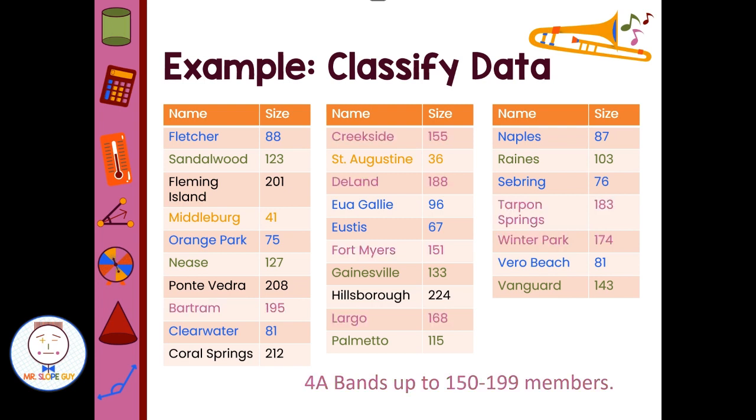4A is bands from 150 to 199. One, two, three, four, five, six, seven bands. And that leaves left our big bands of 5A. There's 200 to 249 members. One, two, three, four. We have four bands in the 5A category that have between 200 and 249 members.